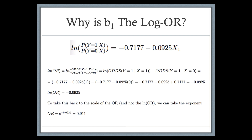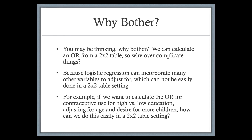This was just to justify that b1, the coefficient, is the log odds ratio, and exponentiating it gives the odds ratio. For the assessment, what you need to know is that logistic regression is a way we can estimate odds ratios. You might be thinking: why bother, since we got the odds ratio from the two-by-two table in a much simpler way? The reason is that logistic regression can also incorporate other variables to adjust for confounders — something you can't easily do in a two-by-two table. For example, if you want to look at the relationship between education and contraceptive use but control for whether or not they want more kids, that's harder to do in a two-by-two table.